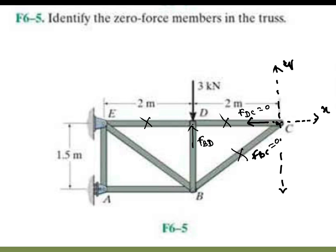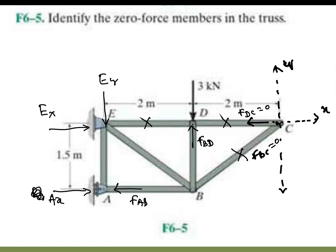Then FD becomes zero. For the supports: at the roller support you write only one reaction, and at the hinge at point A you get two reactions — Ax and force along AB, both of which are colinear. So AB will become compressive and Ax also compressive, meaning no force along AE — it becomes zero. In total: one, two, three, four — the total number of zero force members is four.